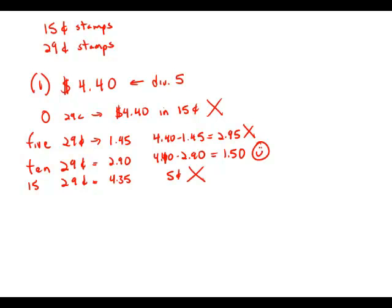So that doesn't work. So it turns out that the only possibility that is allowed is if we buy exactly 10 $0.29 stamps and 10 $0.15 stamps. That's the only combination at all that would add up to exactly $4.40. So statement number one allows us to figure out quite a bit, as it turns out. Statement number one is sufficient.